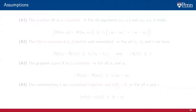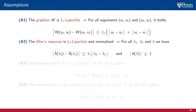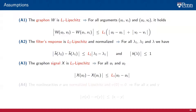Our transferability results require the same set of assumptions we used when comparing graph filters to graphon filters. This is a triplet of Lipschitz assumptions. We require the graphon to be Lipschitz with Lipschitz constant L1. The filter's frequency response should be Lipschitz with constant L2. And the graphon signal X should be Lipschitz with constant L3. Of these three assumptions, it is A2 — the Lipschitz continuity of the frequency response of the filter — that is fundamental. The other two assumptions are necessary, but they are not conceptually that important.